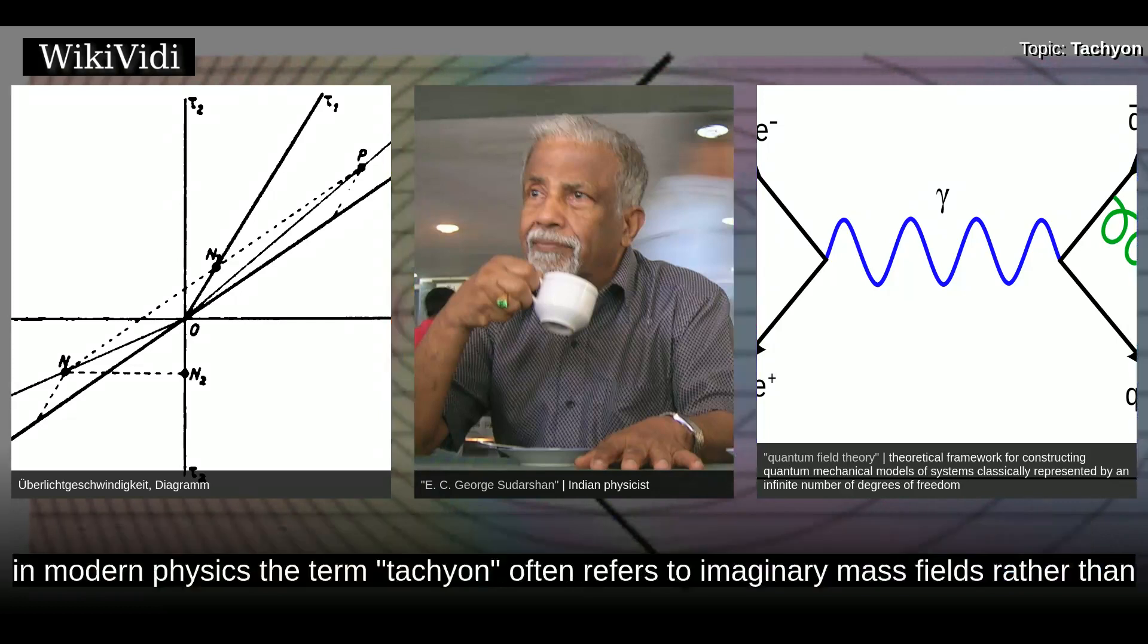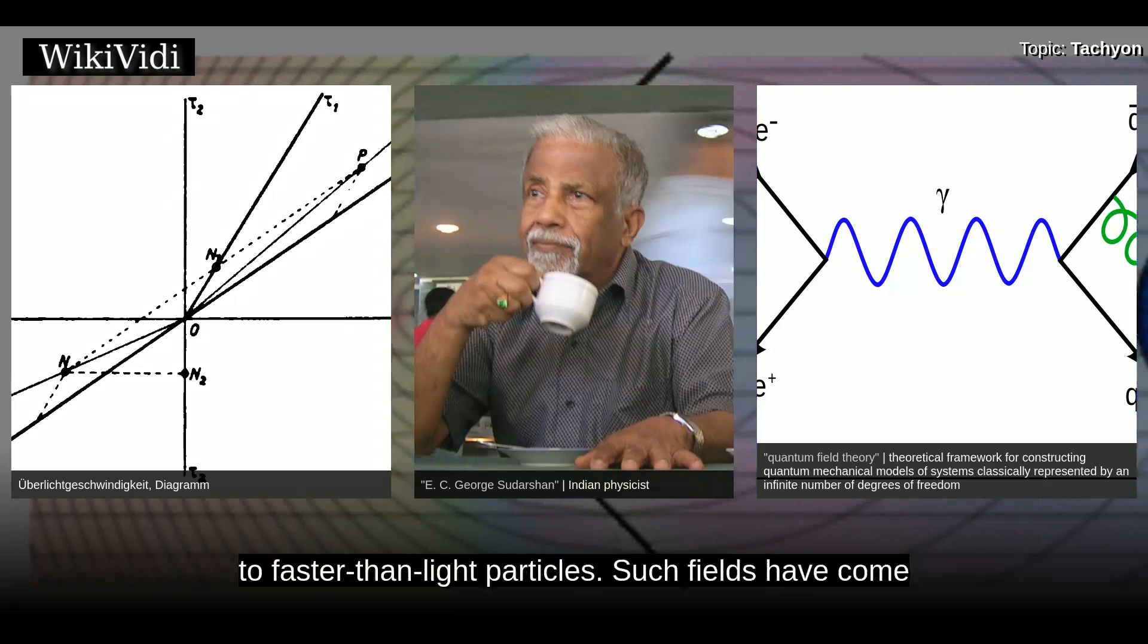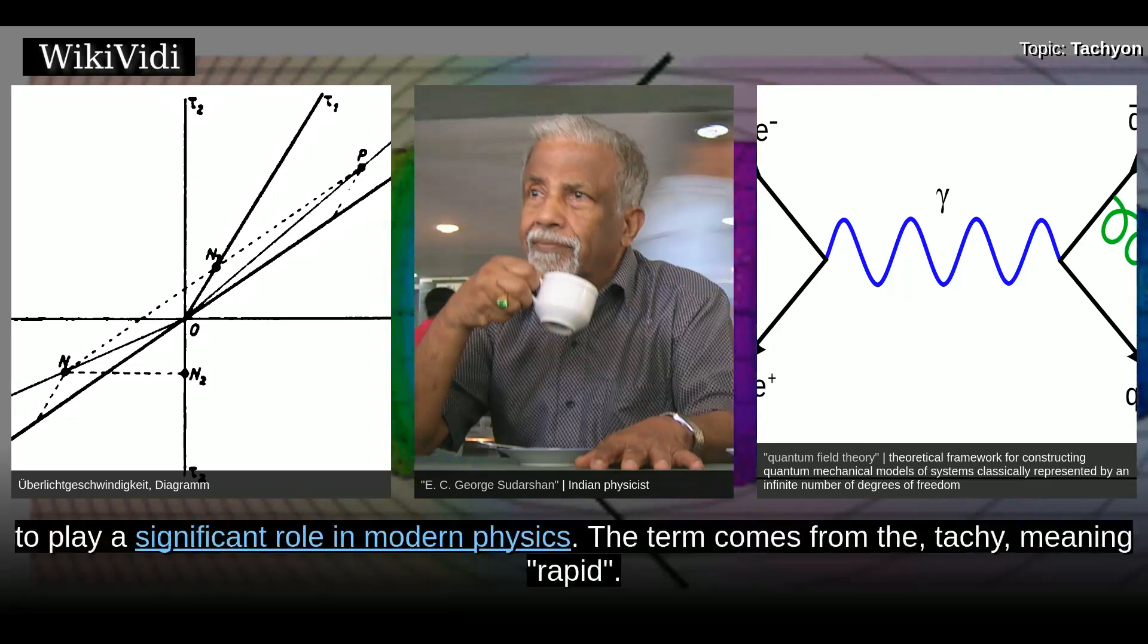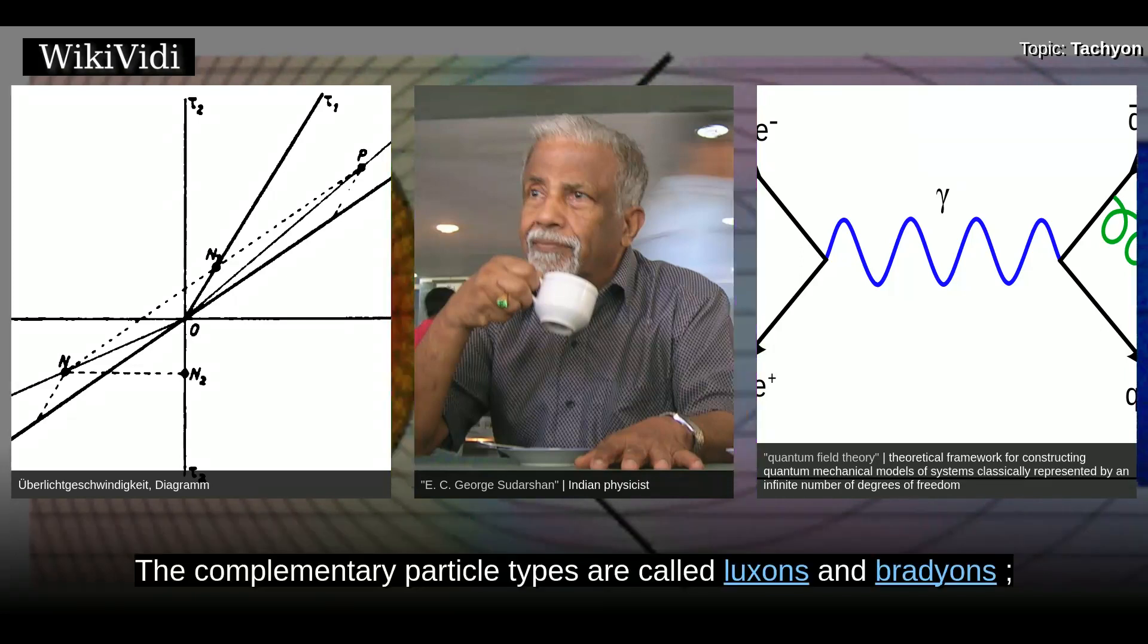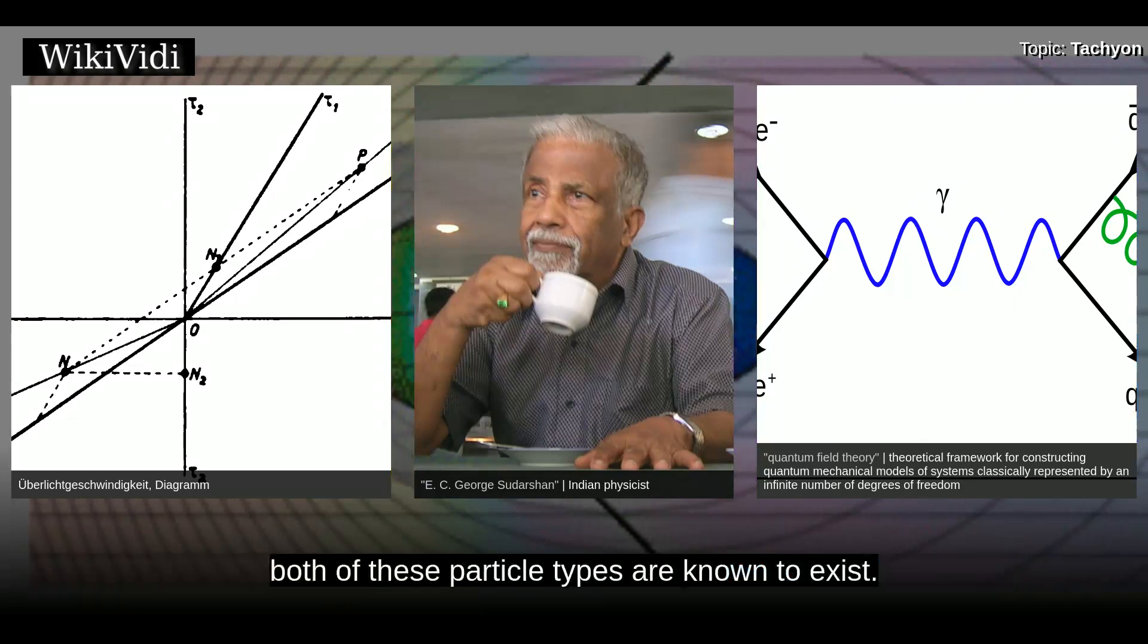Nevertheless, in modern physics the term tachyon often refers to imaginary mass fields rather than to faster-than-light particles. Such fields have come to play a significant role in modern physics. The term comes from the Greek tachy, meaning rapid. The complementary particle types are called luxons and bradyons. Both of these particle types are known to exist.